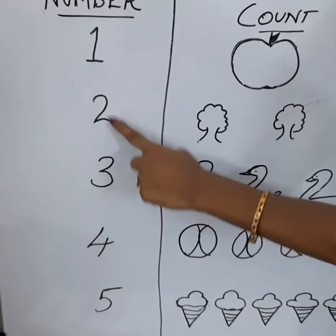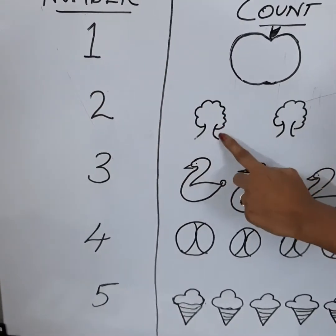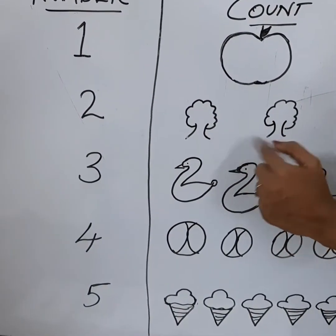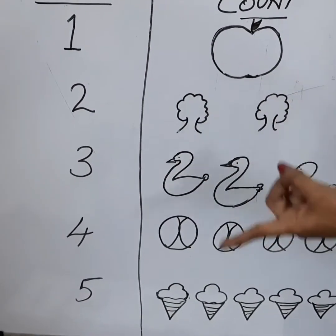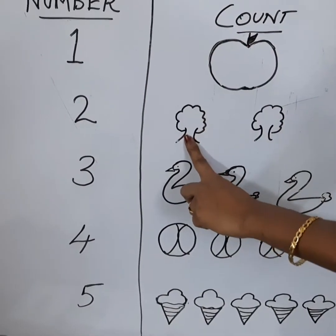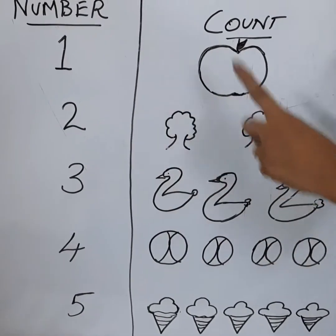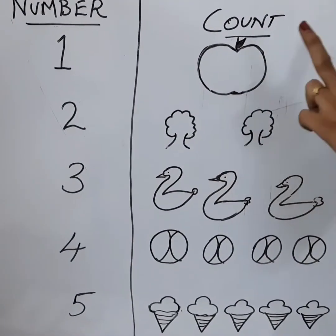Next is after 1, it is 2. So, what is this? Tree. How many trees are here? 1, 2. You have to point your finger on the object and tell 1, 2. Total 2.